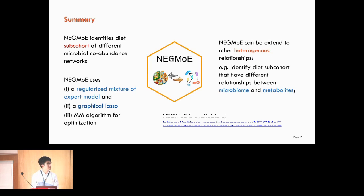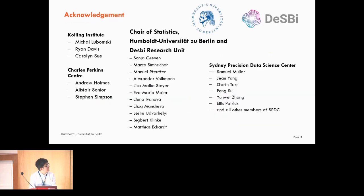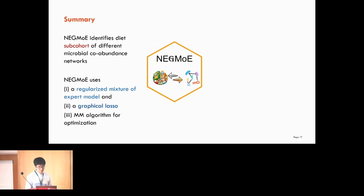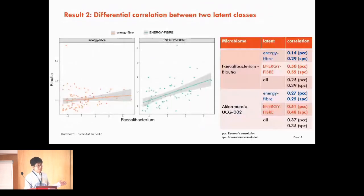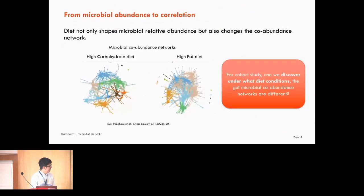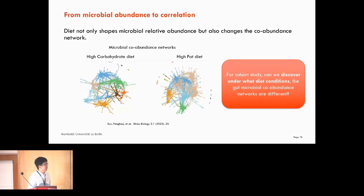Q&A: An audience member asks about the two network visualizations shown, noting they looked jumbled and it was hard to see the difference. The speaker acknowledges this and notes one clearer example was easier to see with more color differences. They explain the result is consistent with the literature, which shows that different dietary conditions lead to different network topology characteristics.